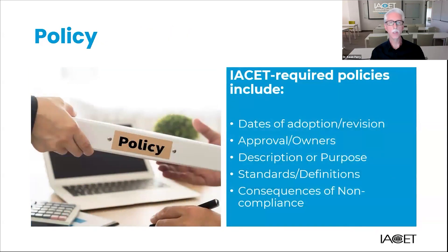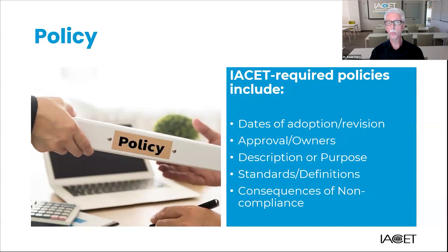Let's take a look at the critical elements in a policy and what commissioners look for as they review them. The components of well-written policies include: first, dates of adoption and revision. A policy should be current, and the format should include a version control system where the original effective date, along with the dates for any changes to the policy, are recorded. All policies, as well as processes, must be in place for at least three months before submitting an accreditation application. Commissioners will look to verify this by looking at the effective date on each policy. Second, approval and/or owners — who is responsible for the policy and who enforces it? The commissioner evaluating your application will want to see that your organization has identified the person or role responsible for the policy and who enforces it. A good policy will also designate the policy owner if that happens to be different from the approver.